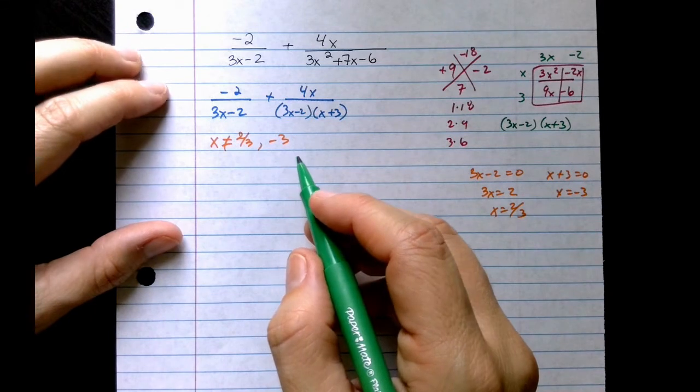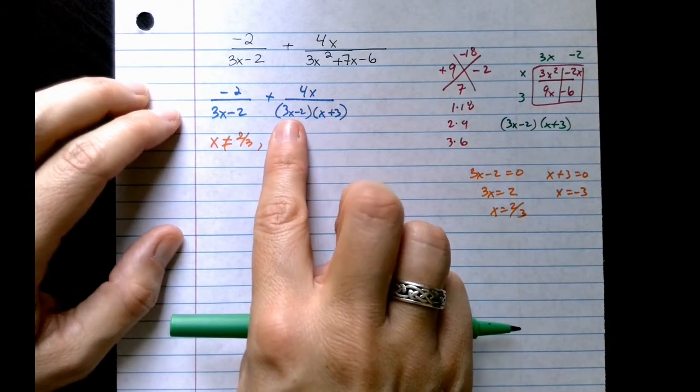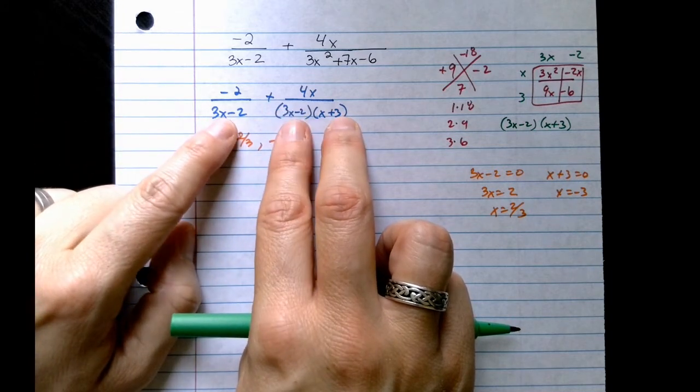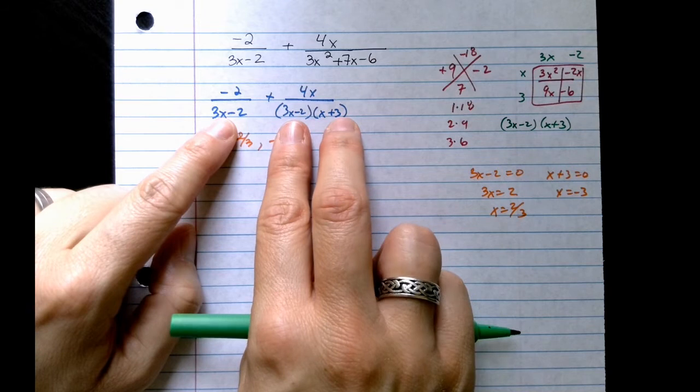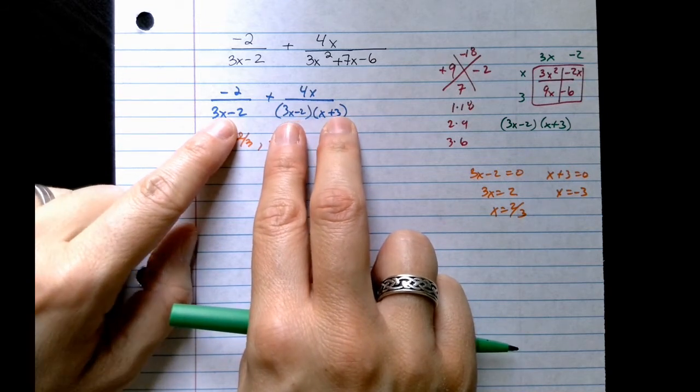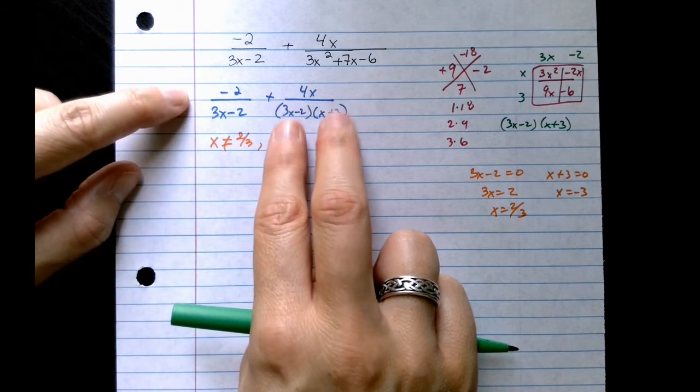Now let's look at the common denominator. This fraction has two expressions, a 3x minus 2 and an x plus 3. This fraction shares something in common that's super helpful. So what we can do is make the second denominator the LCD, because then all I have to do is modify my first fraction to line up with the second fraction.